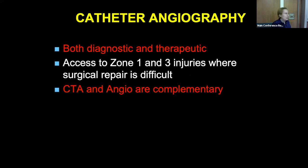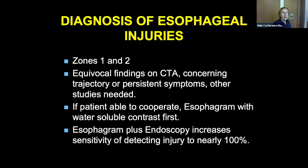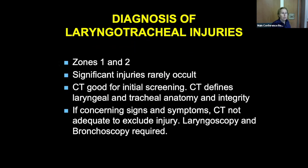A few words about other evaluation modalities: angiogram is both diagnostic and therapeutic. We rarely do it diagnostically in stable patients anymore, but it's an option for zone one and three injuries where surgical repair is difficult, and it can be used in conjunction with CTA. For esophageal injuries where CTA findings are equivocal and trajectory is concerning, esophagram is usually the first step; endoscopy then increases sensitivity if there are still questions. Laryngotracheal injuries are usually symptomatic, but if there's a question, CT is a very good test.